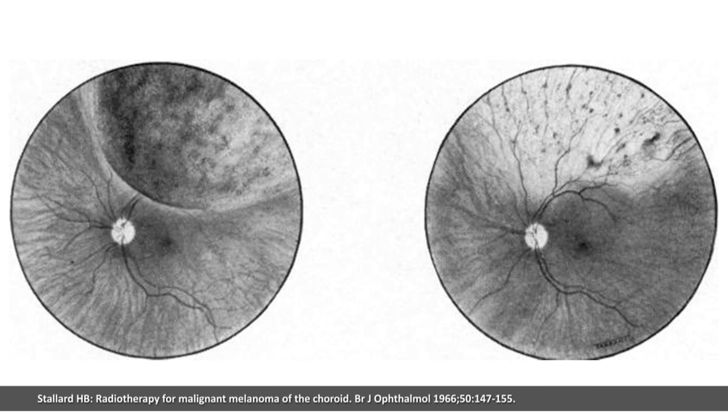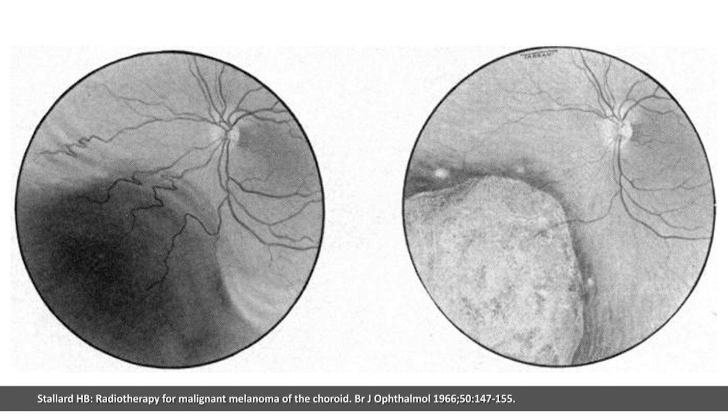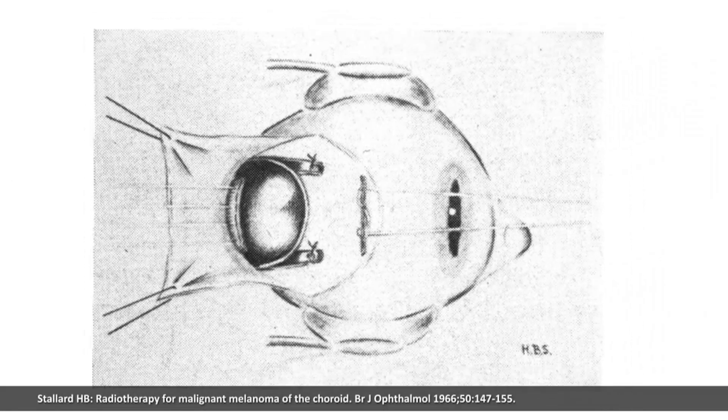H.P. Stellard used radon for treating retinoblastoma and in the 1960s introduced cobalt-60 episcleral plaques for the treatment of choroidal melanoma.